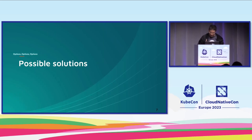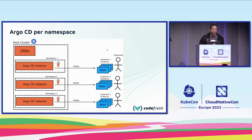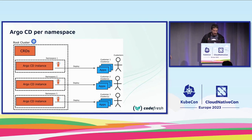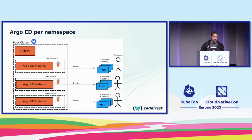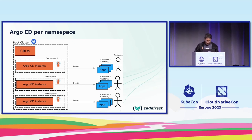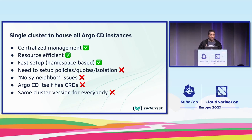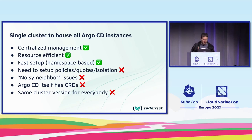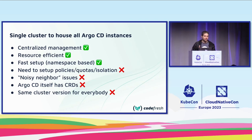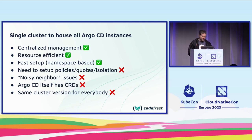What are the possible solutions? If you're familiar with Argo CD, it has an installation mode where you install it on a namespace. You split the installation into two parts: first, install the CRDs only on the parent cluster, then for each namespace install an Argo CD instance that works only on that namespace. Customers can then connect their own clusters to their own Argo CD instance — each customer has a namespace on a shared cluster. This is easy, centralized, resource-efficient, supports auto-scaling, and creating a namespace is super fast.